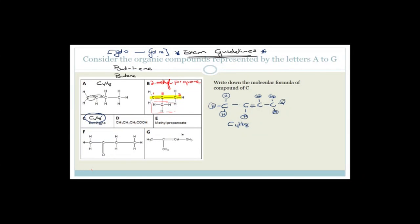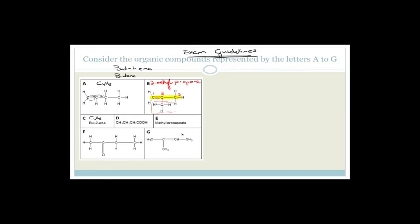How did I know yesterday that the formula was C4H8 without drawing it? Because bute means four carbons, and the general formula for an alkene is CnH2n — so n=4 gives C4H8. That's why you want to learn these general formulas. Moving on.